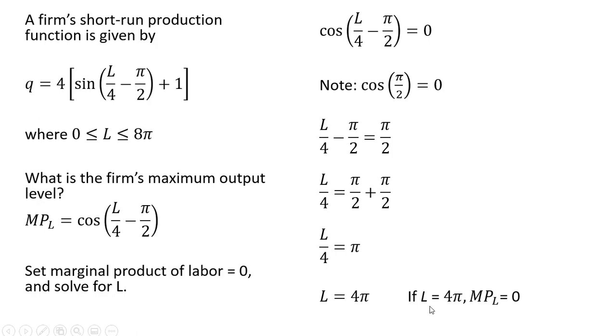So once again, if L equals four π, if we were to plug four π into the marginal product of labor expression here, it would indeed equal zero. So the number of workers that maximizes output occurs at four times π.